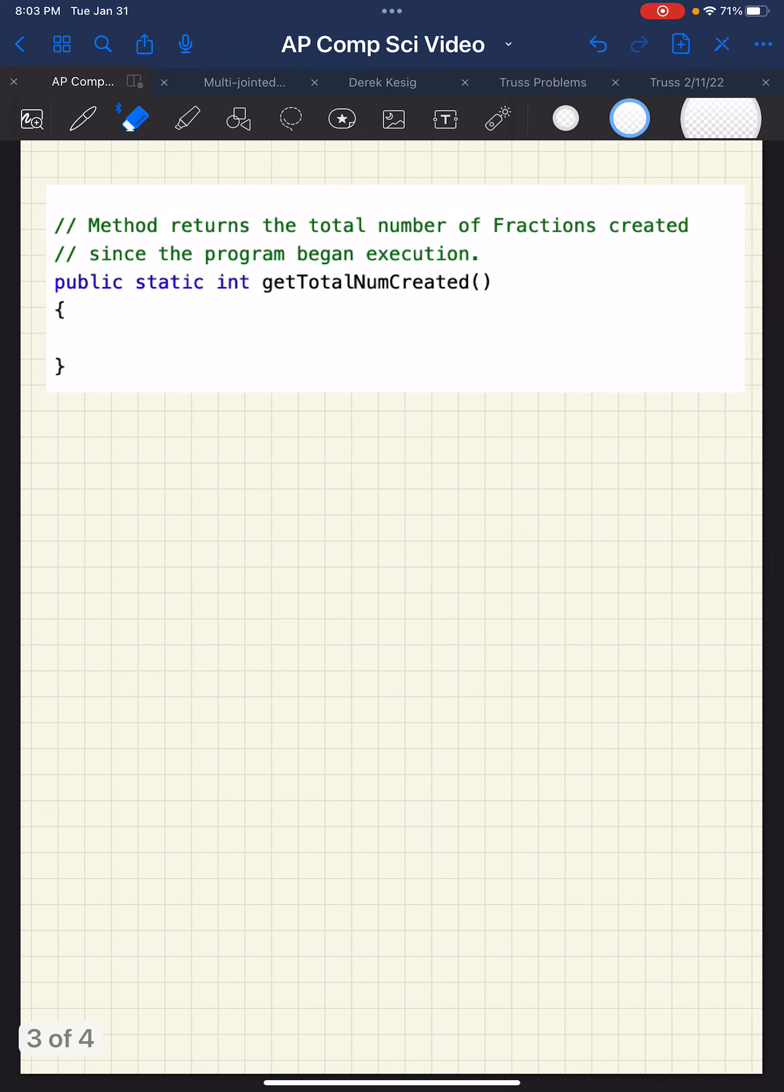Here's another example of a static method that you might use, getTotalNumCreated. This just gives you access to the, not instance variable, sorry, the static variable. Not an instance variable. Gives you access to the static variable total num created.